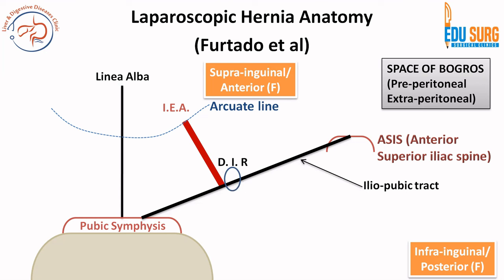We already know that the deep inguinal ring is lateral to the inferior epigastric artery pulsation. Similarly, you will see the deep inguinal ring, which is an opening in the fascia transversalis lateral to the inferior epigastric artery fold. These are the landmarks already seen, just creating the anatomy that Furtado has described in a very simplified manner. A lot of questions are asked in this area, and this concept is very important if you want to embark on laparoscopic groin hernia repairs.